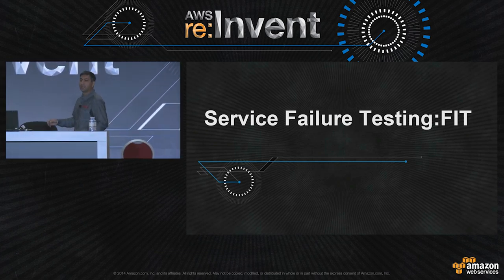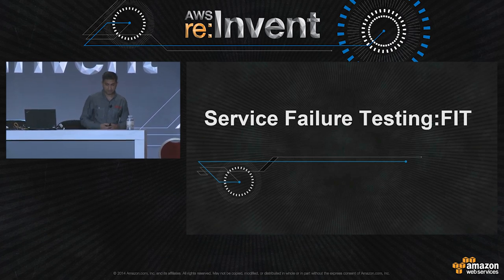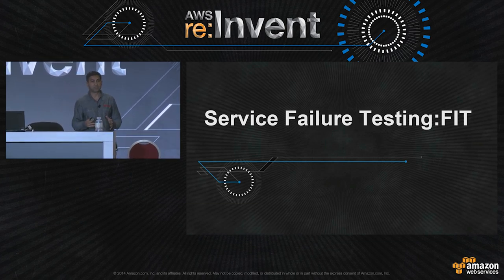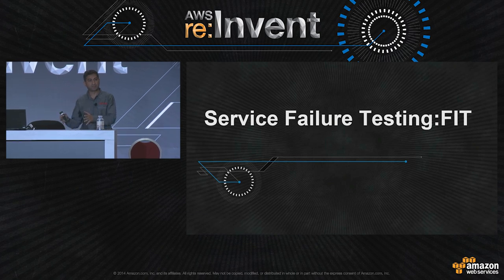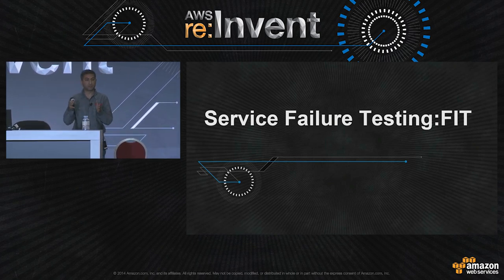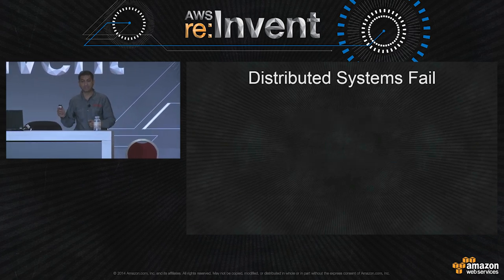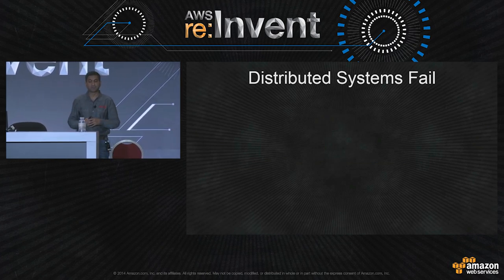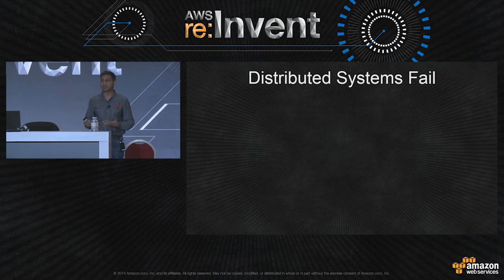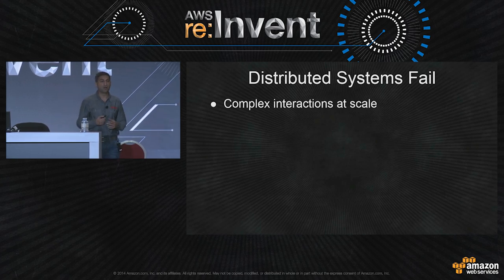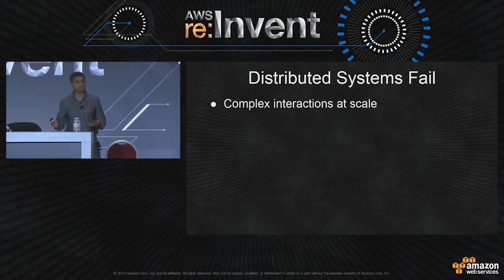Thank you, Josh. Hello, everyone. I'm Naresh and I'm going to talk more about service failure testing. As you saw in Josh's slides, instance failing, zone failing, and ASG failing are pretty well-defined scoped problems. But services failing is a totally different can of worms. Let me go back to the fundamentals of distributed systems. Distributed systems fail — they are inherently prone to failure. Some of the reasons are because of complex interactions at scale. There are so many different services in a distributed system, which creates complexity in the whole system. There's variability across services — that same single service can be called by multiple other services in a service-oriented architecture.